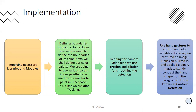After that, we take the live input video feed and apply image smoothing techniques using morphological operations to smooth the image. The morphological operations comprise two functions: erosion and dilation. We then use hand gestures to control our color variables — we capture an image, apply Gaussian blur, and apply an HSV mask to starkly contrast the hand shape from the background. This is known as contour detection.